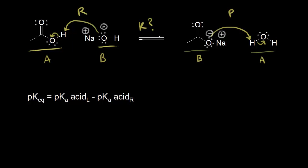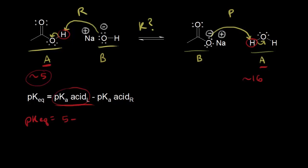We need to know the pKa of the acid on the left. Acetic acid is the acid on the left, and this proton has a pKa of approximately 5. On the right, water is functioning as an acid, and the pKa of this proton on water is approximately 16. So the pKeq for the forward reaction equals the pKa of the acid on the left (approximately 5) minus the pKa of the acid on the right (approximately 16). Five minus 16 gives us a pKeq equal to negative 11.